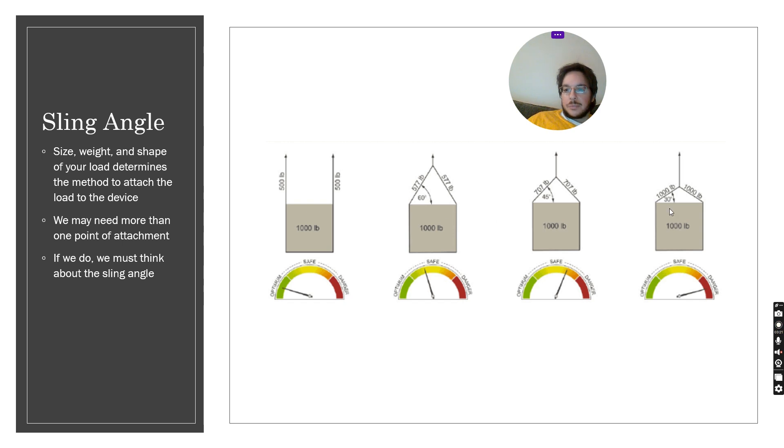Since we've introduced this angle part of the force is horizontal. When we're at 30 degrees we've actually doubled the force on our sling. So now even though we're lifting a thousand pounds straight up we have a thousand pounds of tension in our rope on each side. This could be a dangerous situation if our rope is not designed to carry that load.